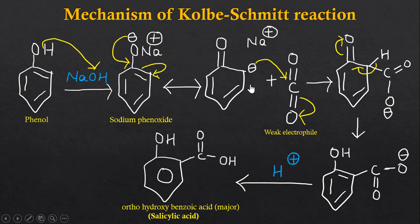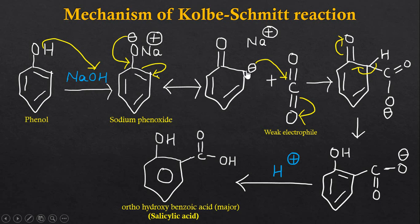That's why this structure will act as a nucleophile and it will attack on the electrophile, which is CO2 here. In this CO2 molecule, these pi electrons are shifted to the oxygen atom due to the higher electronegativity of oxygen atom, and electron density will decrease on this carbon atom. So it will act as an electrophile, and it is attacked by this nucleophile, and a sigma bond will be formed between this carbon atom and this carbon atom, and we will get this structure.